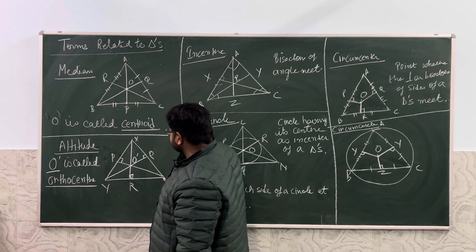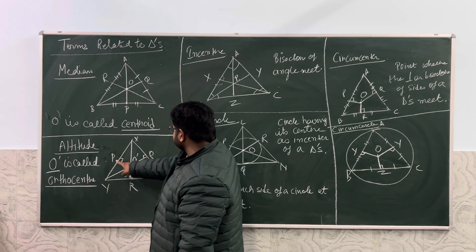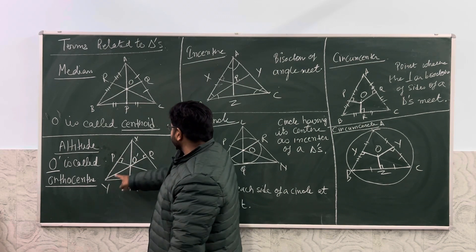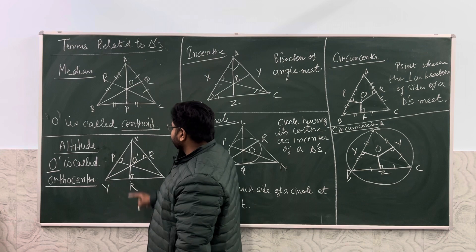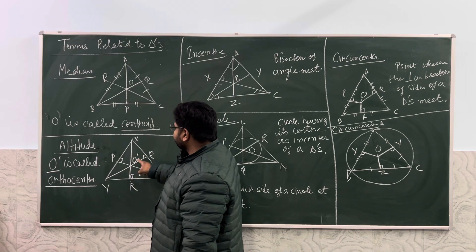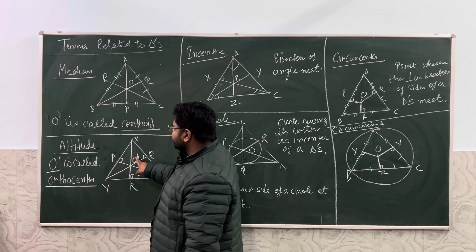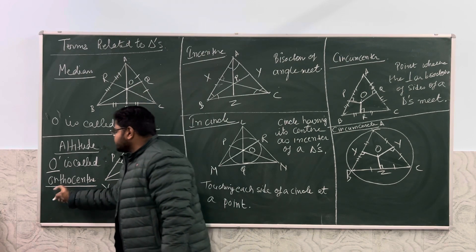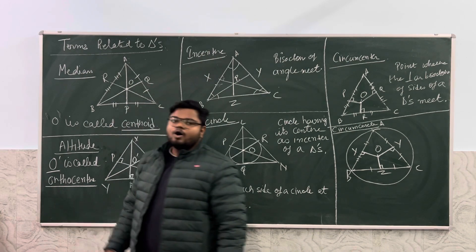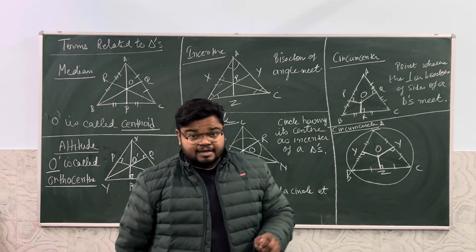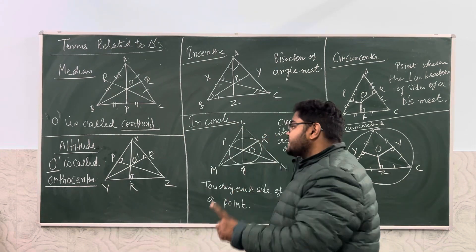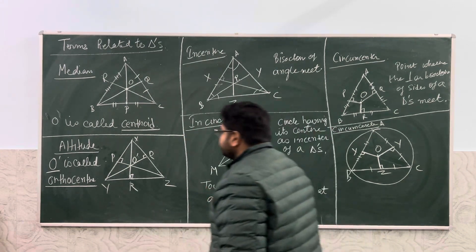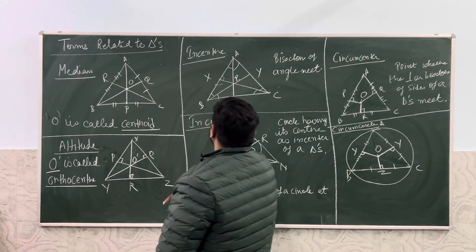All three altitudes meet at a point. The altitudes are drawn to points P, Z, Y, Q, X, and R. They all meet at a point called O-dash, and that point is called the orthocenter of the triangle.